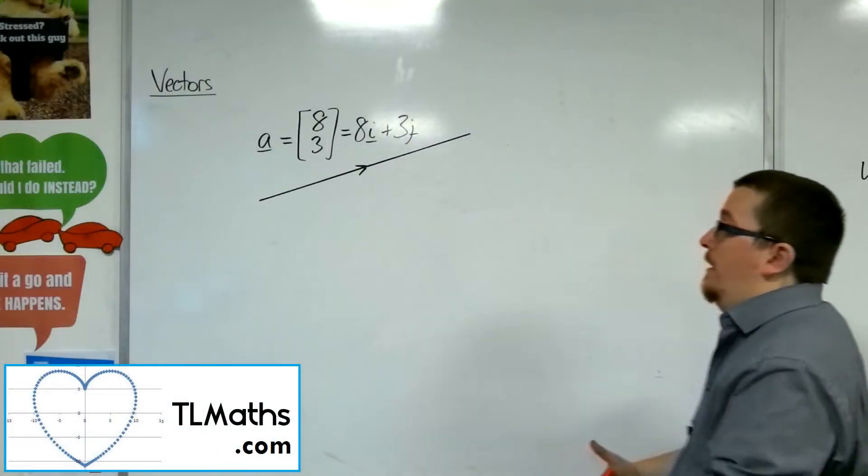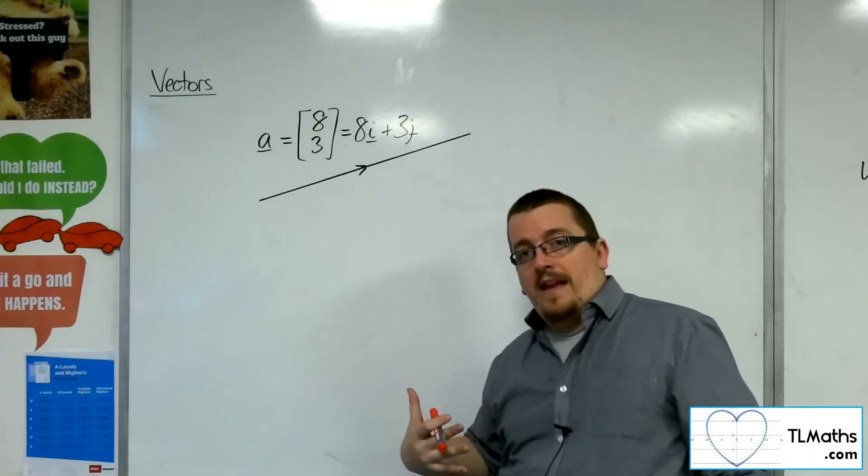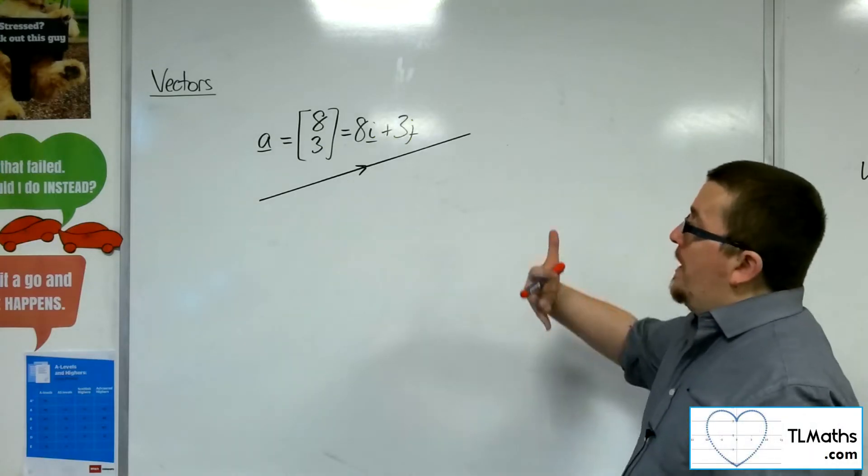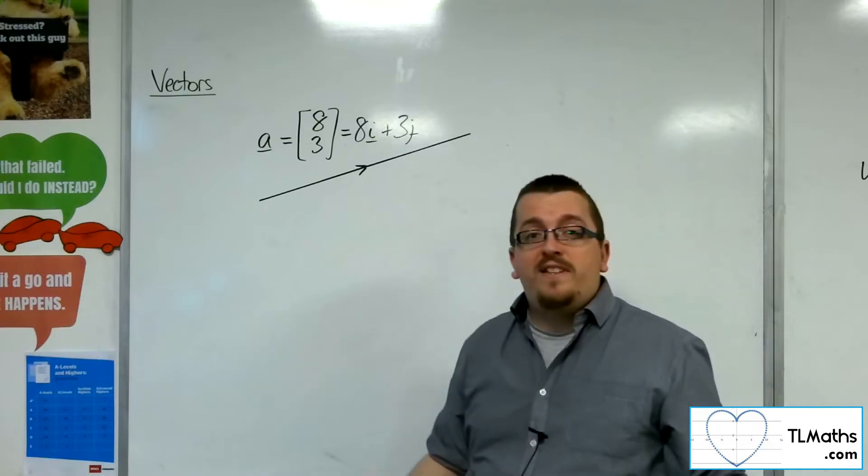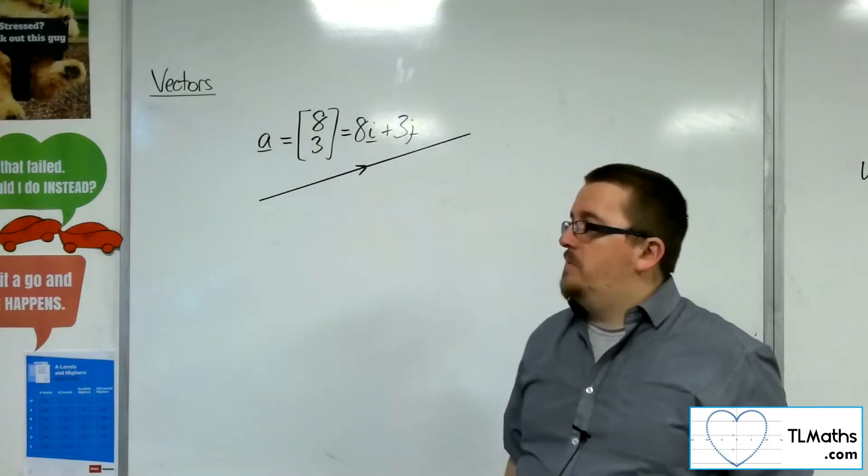Let's say we've got a vector, let's call it A, and it's the vector that goes 8 along the x-axis and 3 up the y-axis, so (8, 3). I could represent it as either a column vector or in component form, it doesn't matter which.